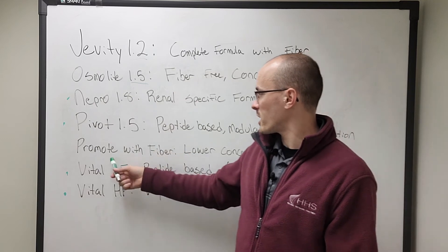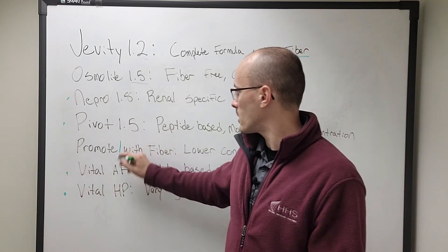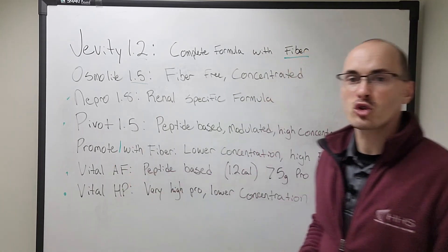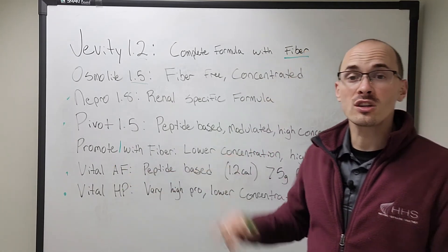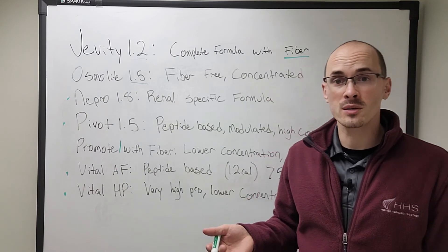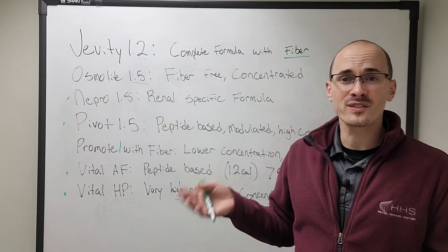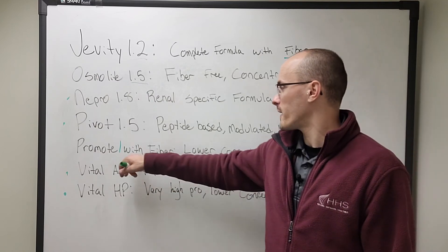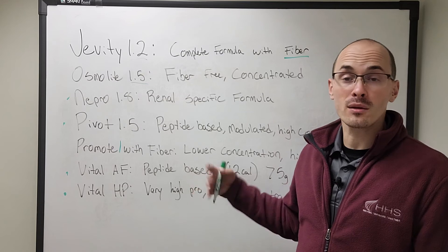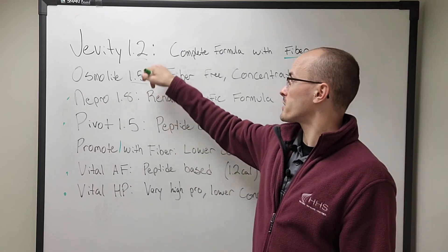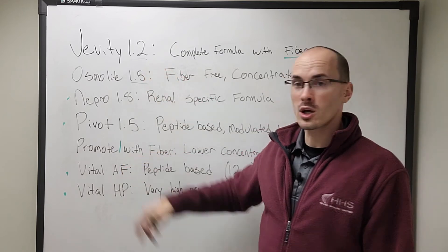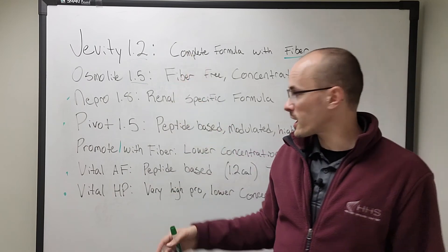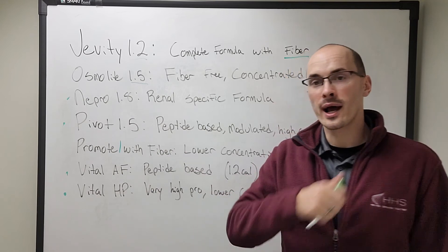Last but not least, we have Promote with Fiber. This is a 1.5 cal formula. And it has 63 grams of protein. So that's going to be really important for our high protein patients. Maybe their needs are 1500 calories, but they need 100 grams of protein a day. That's going to be the formula for you. You're not going to meet their protein needs with Osmolyte or Jevity. I'm going to go with Promote. So if you run the numbers with Osmolyte and Jevity, they don't work out, then you probably need to try out Promote.